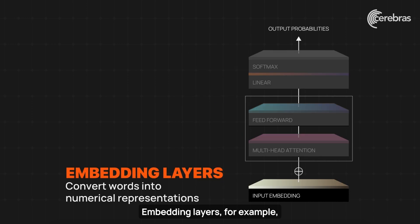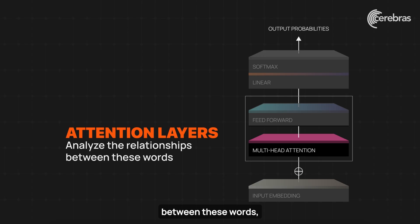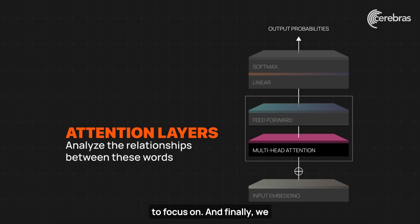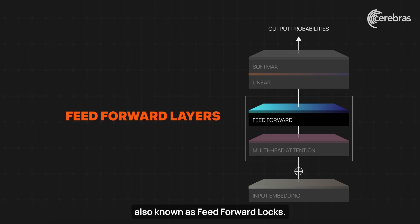Embedding layers, for example, convert words into the numerical representation that an LLM can understand. Attention layers, on the other hand, analyze the relationship between these words, figuring out which are the most important to focus on. And finally, we have one set of fully connected layers, also known as feedforward layers.